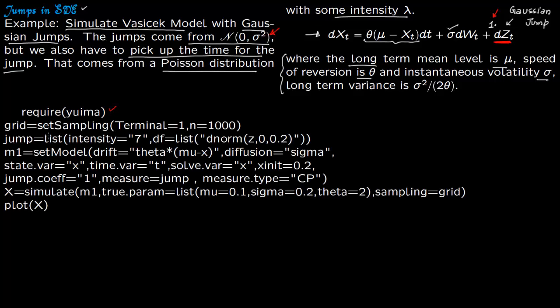So you require this package. We are going to set the grid to 1000. I am taking the intensity, this intensity lambda as 7. This intensity is going to determine the time at which the jump will happen. The jump is going to happen from this distribution Z(0,0.2). So normal 0, variance is 0.2. I have not set it as 1, I have set it as 0.2.